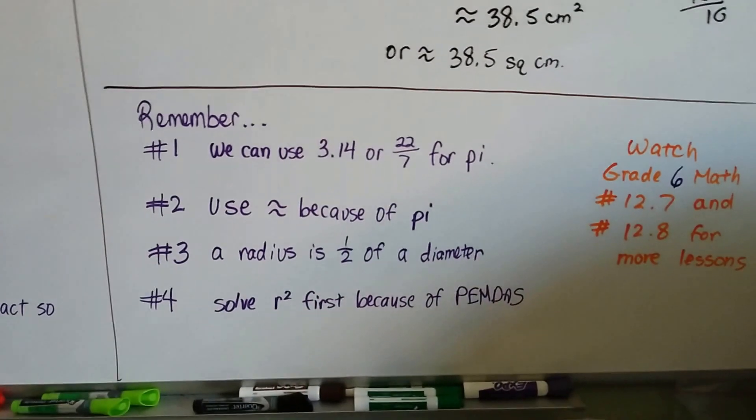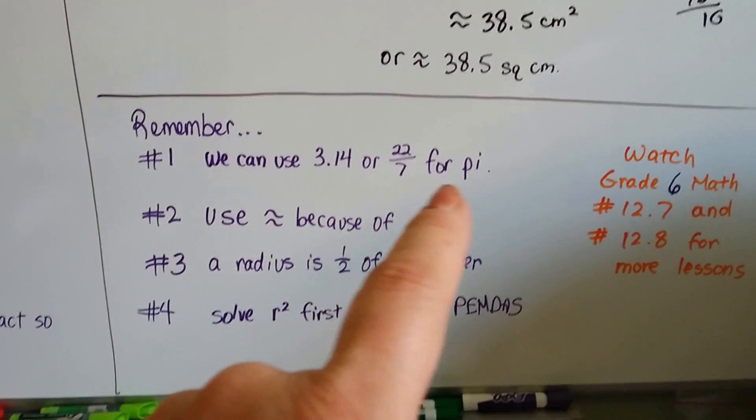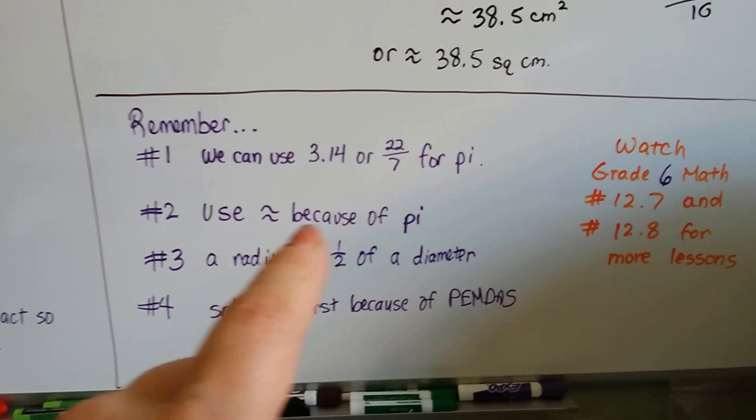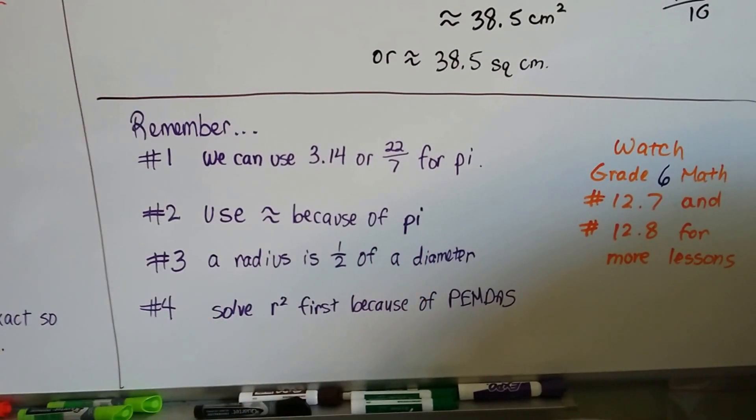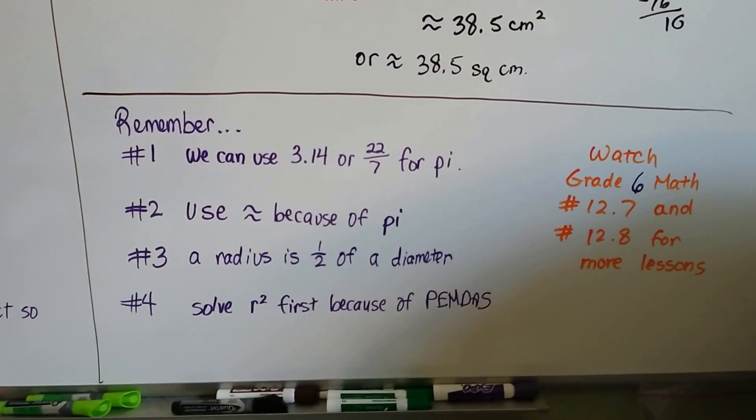So four things to remember. The first thing is that we can use 3.14 or 22 over 7 for pi. Number two, we use the approximate symbol because of pi, and because it's not exact, and it's got so many digits because we just used 3.14 as a rounded off number.